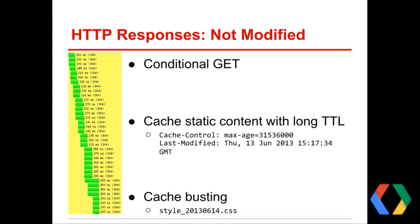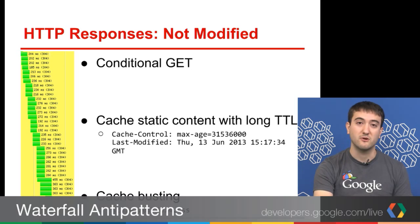There are a couple ways to do cache busting. One is to append a query string parameter at the end of the resource. The other suggested way is to just change the file name itself. Instead of serving style.css, you have style underscore and then some date stamp. Most commonly it's the date the file was modified, so tomorrow we might set this to 2013-06-14. When there is a new resource being requested, it totally ignores what's in cache and fetches the new one. Caching is very important — the fastest request is the one you never even have to make in the first place.